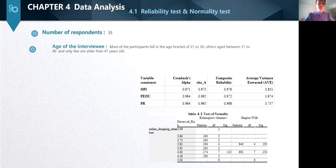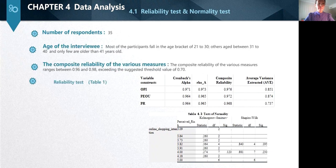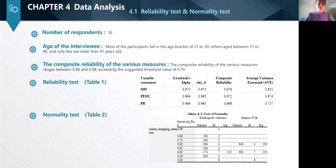According to the results from Table 1, the composite reliability of the various measures ranges between 0.96 and 0.98, exceeding the suggested threshold value of 0.7.